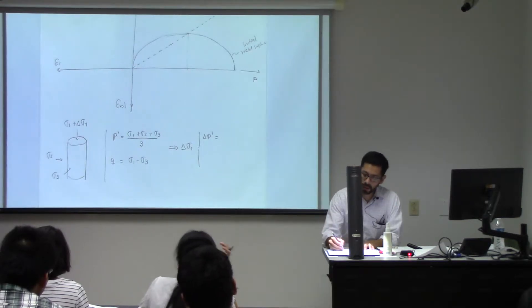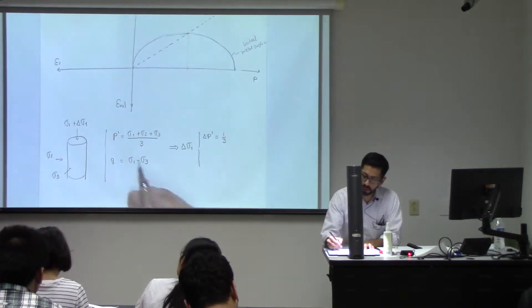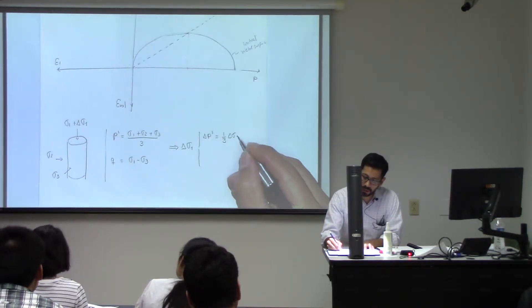It's going to be one third, right? So the derivative is going to be one third. So the change of delta P prime with respect to sigma one is going to be that.